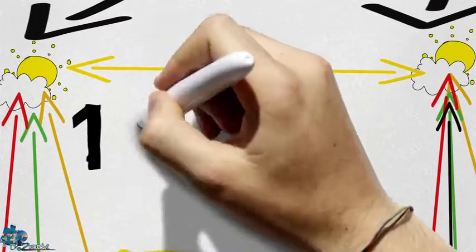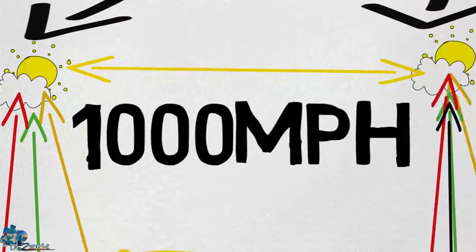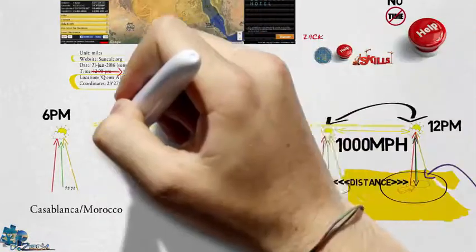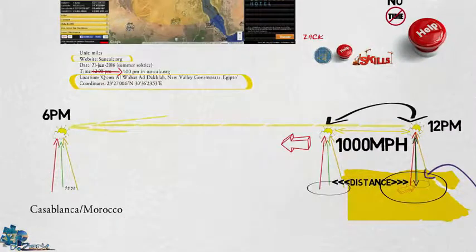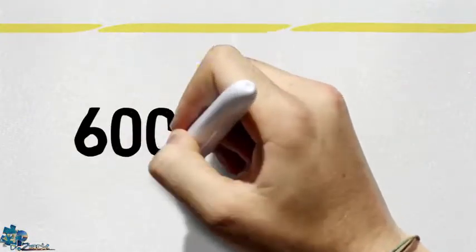So to know how to do that, we should use the time and the speed that we measured before. For example, if the speed of the sun is 1,000 miles per hour and the time in Casablanca is 6 p.m., that means that the sun only moved 6 hours to the west.